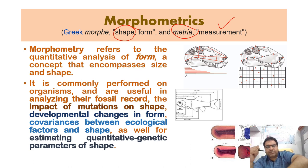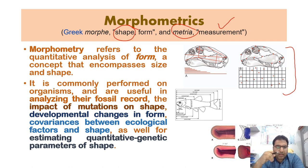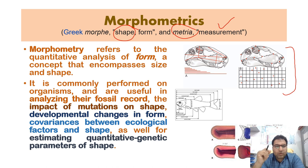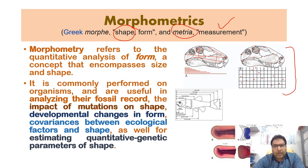Morphometry is performed on organisms and is useful in analyzing their fossil records. We also undertake morphometry to study the impact of mutations on shape, developmental changes in form, covariances between ecological factors and shape, as well as estimating the quantitative genetic parameters of shape. So morphometry is very helpful in taxonomy as well.